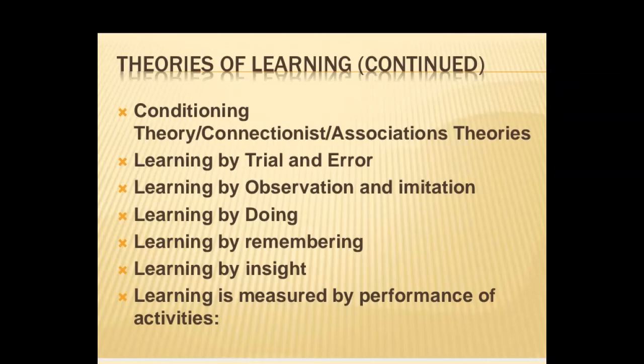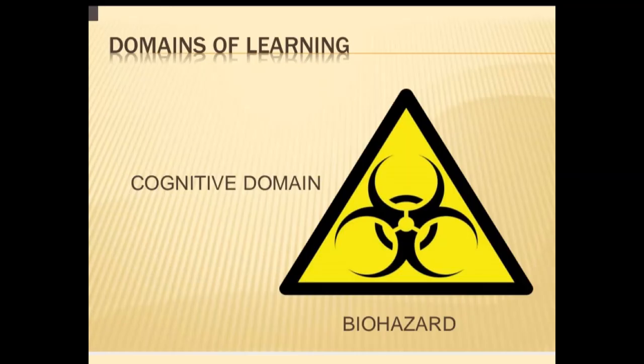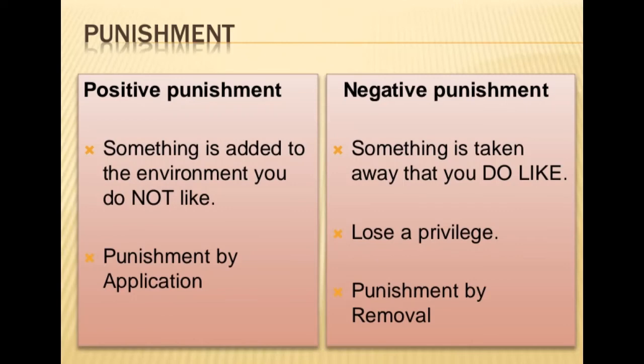In cognitive gestalt theory, importance is placed on experience, meaning, problem solving, and development of insights. The concept is that individuals have different needs and concerns at different times and have subjective interpretations in different contexts. The key to learning and changing is the individual's cognitions, including perception, thought, memory, and ways of processing and structuring information.